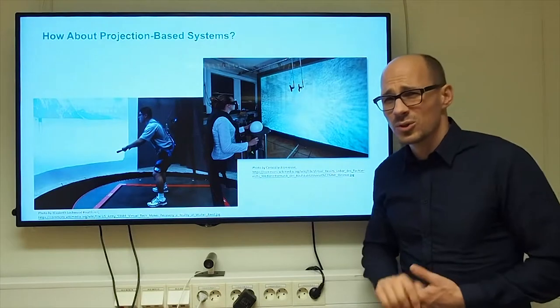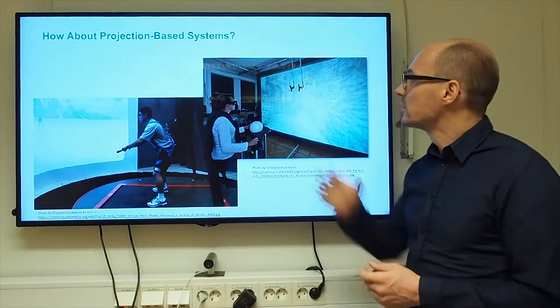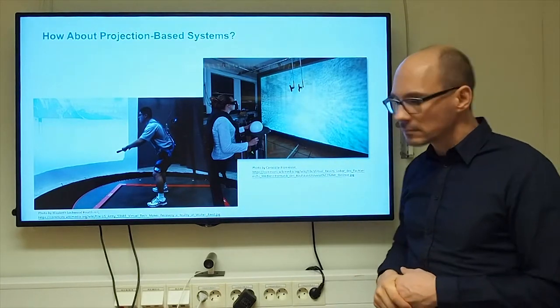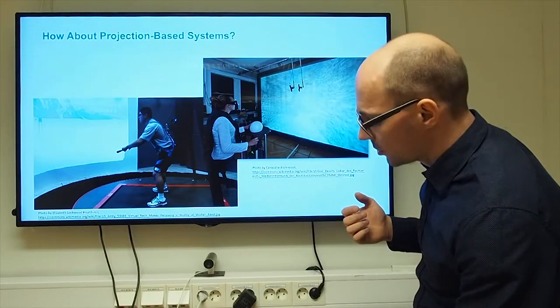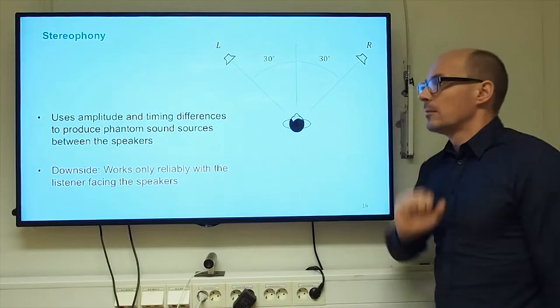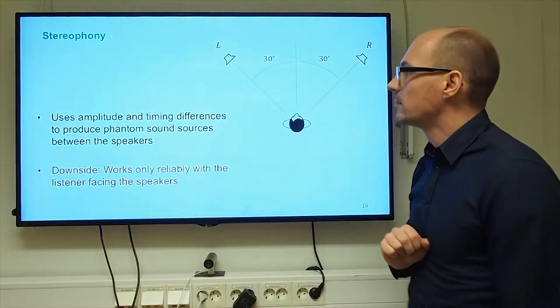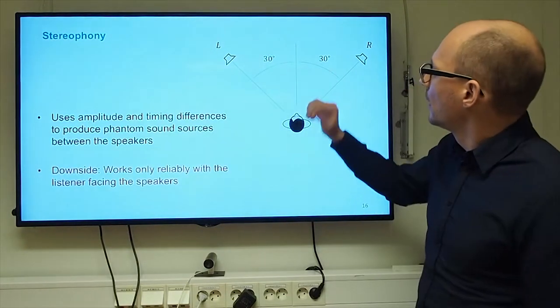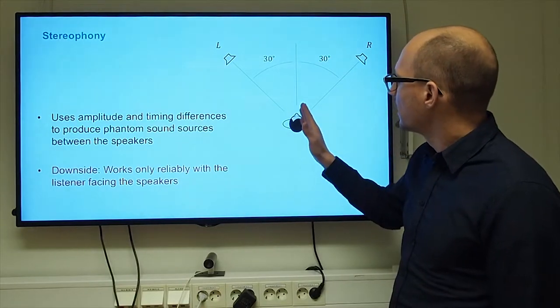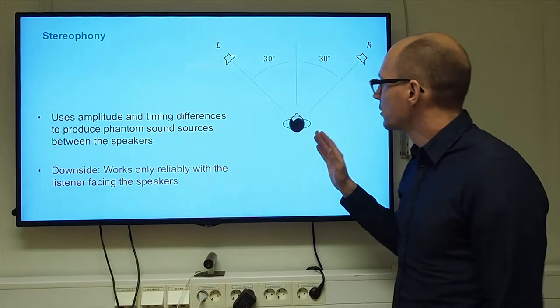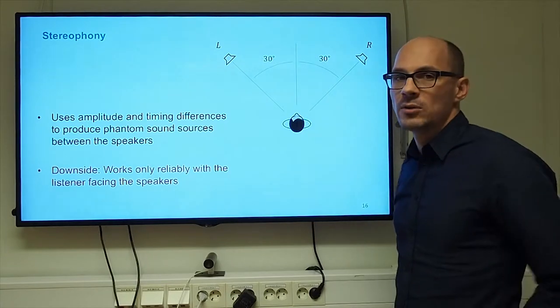So for those systems, we would not want to use headphones. We would like to install loudspeakers somewhere and use these loudspeakers to reproduce the audio. A straightforward method for this would be stereophony, which uses two loudspeakers and it assumes that the user is located at the symmetry plane between those loudspeakers.